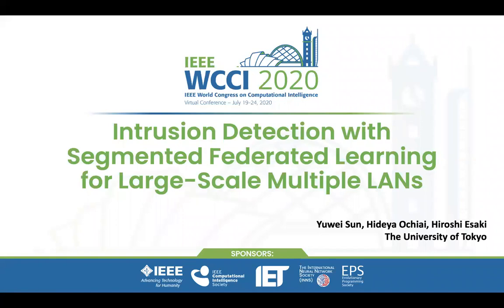Did you know that by 2020, the number of IoT devices in homes will rise to 12.86 billion? Did you know that hacker attacks occur every 39 seconds? Especially due to the COVID-19 pandemic, it shows an imperative need for automation and digitalization in various industries. As a result, robust network monitoring systems for safeguarding these networks become extremely significant, detecting and tracking anomalies in a network.